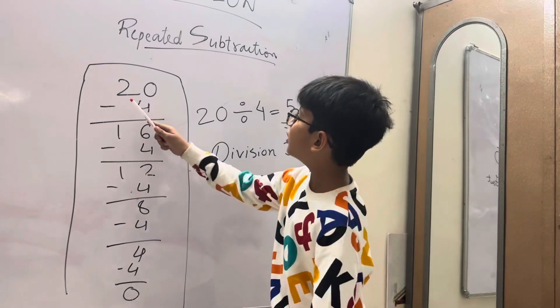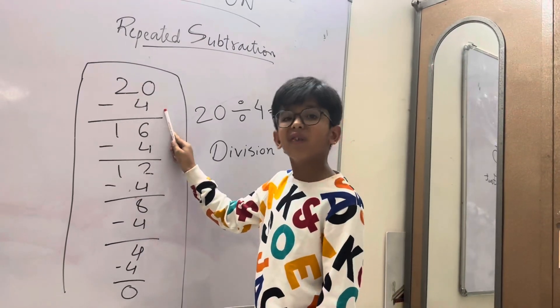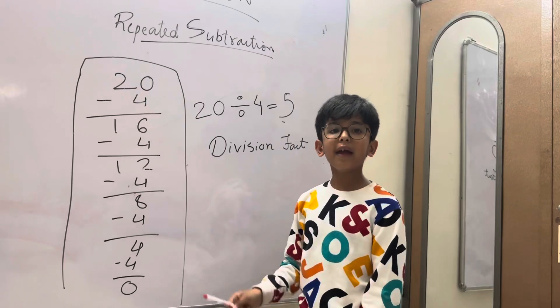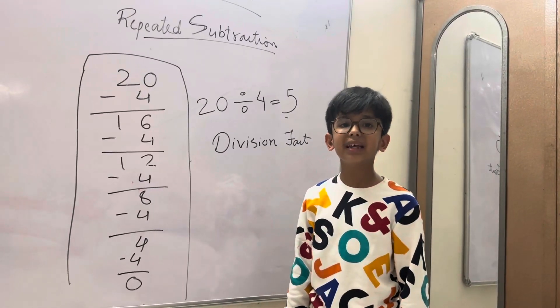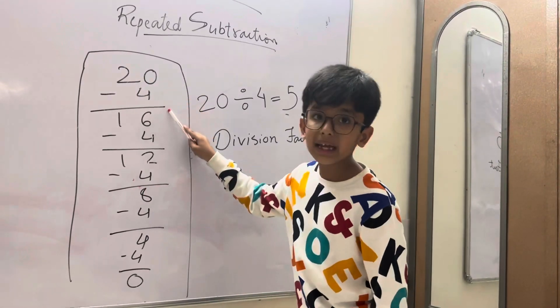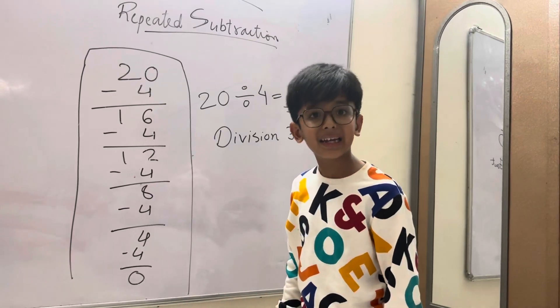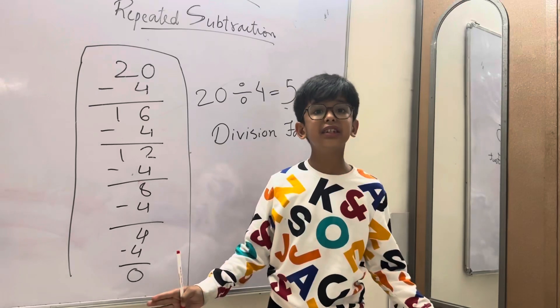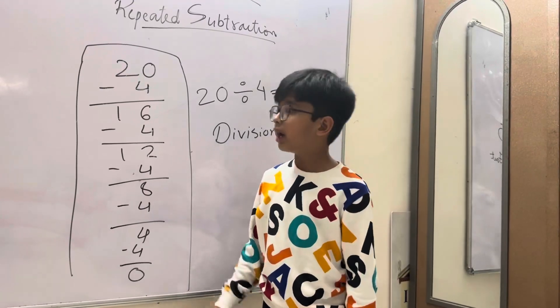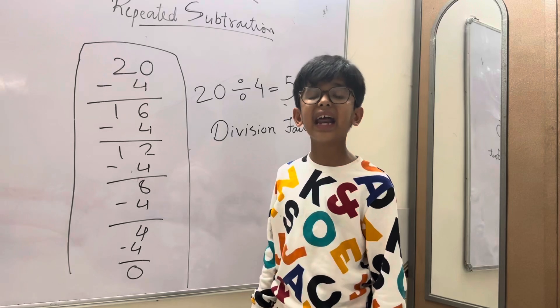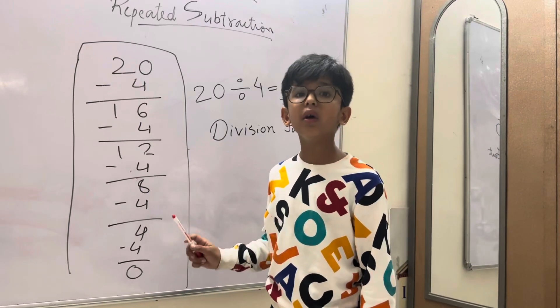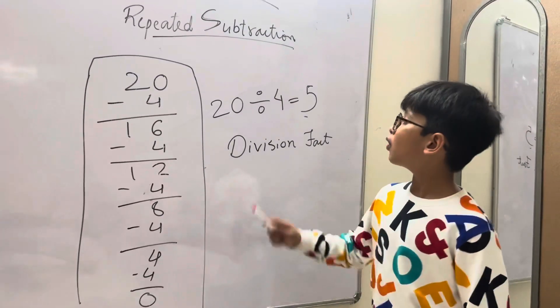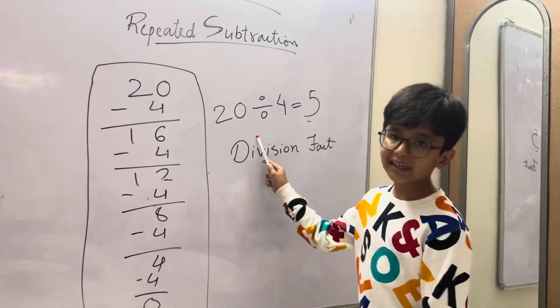The regular number is 20. Now we have to see which number is equally repeatedly subtracted. So 4 is repeatedly subtracted. Now 4 is repeatedly subtracted in 5 equal groups, so we have to write 20 divided by 4 equals 5. This is the division fact.